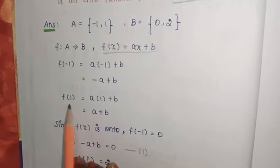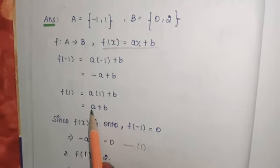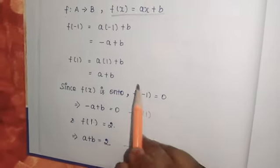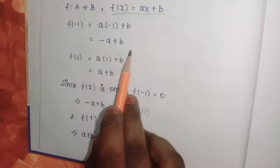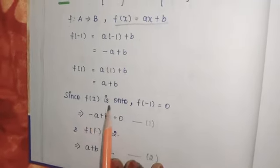Now substitute 1: f(1) = a(1) + b = a + b. Now we need to find the range. The range values are -a + b and a + b. Since f(x) is onto...